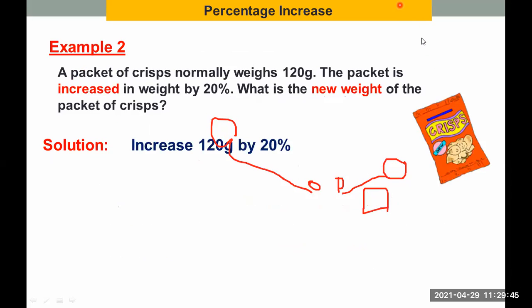Let's have another example. This example I really love the most. A packet of crisps normally weighs 120 grams. The packet is increased in weight by 20%. Maybe there's a promo. What is the new weight of the packet of crisps? So we have 120 grams by 20%. So we need to increase them. This is actually the real problem. Step 1: Get 20% of 120.